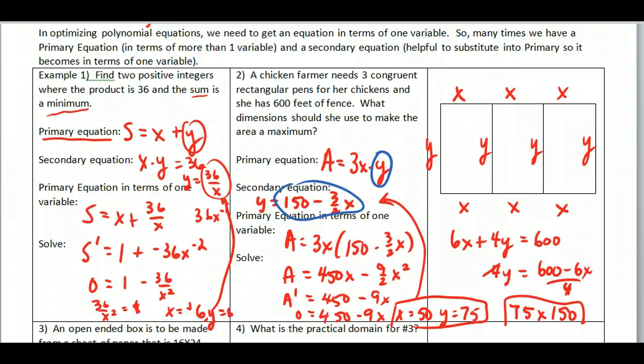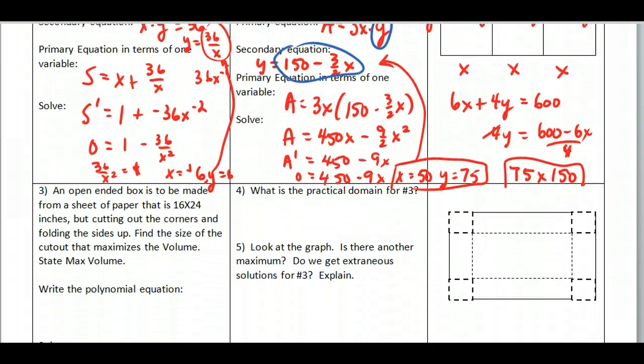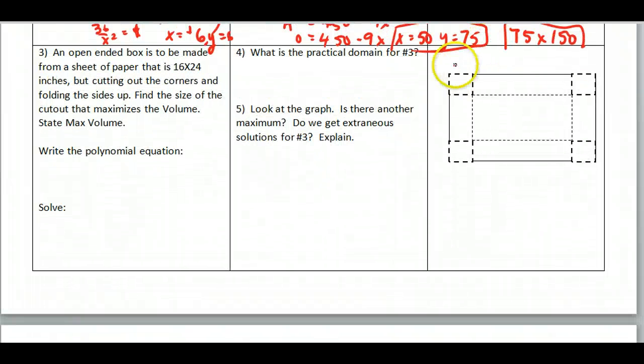All right, moving on. Open-ended box. Many of you have seen this problem before, but what we do is we take a sheet of paper or cardboard, whatever you want to say, and we're going to cut out the corners. So I'm going to cut out these corners of this piece of paper.